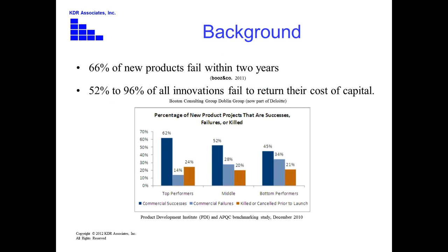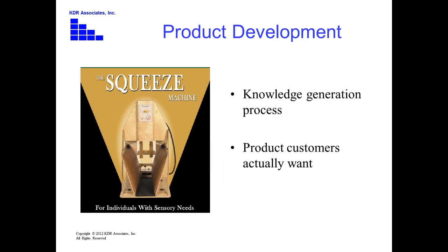Let's take a step back for some background. If you Google 'product development success,' you get a huge number of different surveys, and they all tell the same story: there's real opportunity for improvement. Between a third and two-thirds of products fail or are considered failures in the marketplace. And somewhere between half and quite a high number of innovations fail to return their cost of capital. This is what's motivating us at AME — to look at how lean tools can help improve our success rate in product development.